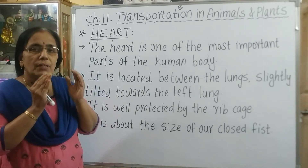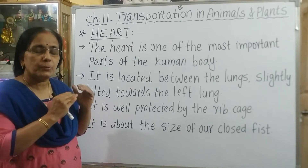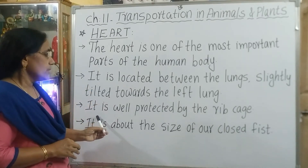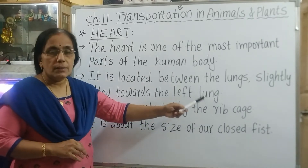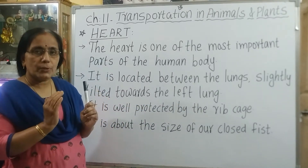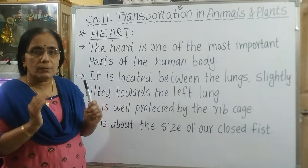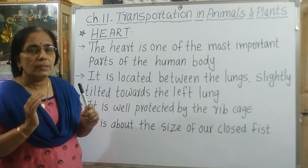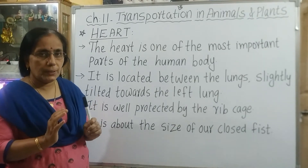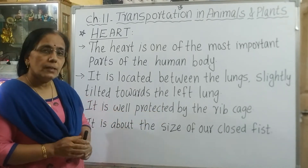In the chest cavity, the heart is located between the lungs, slightly towards the left lung. It is well protected by the rib cage. The heart and lungs — all these important parts are well protected by the group of bones called ribs, and together it is known as the rib cage.